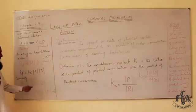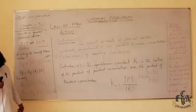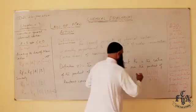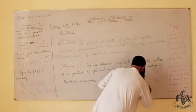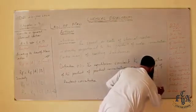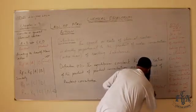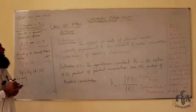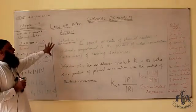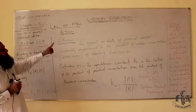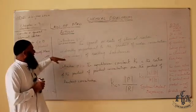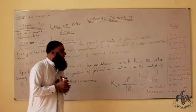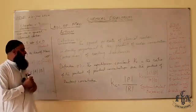By dividing equation two by equation one, we arrive at the equilibrium constant expression. Kc equals the concentration of product C multiplied by the concentration of product D, over the concentration of reactant A multiplied by the concentration of reactant B. This is the equilibrium constant expression. The equilibrium constant Kc is the ratio of product of product concentrations over product of reactant concentrations.